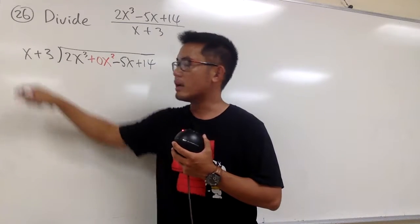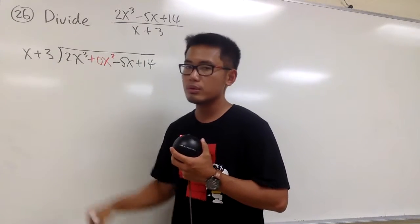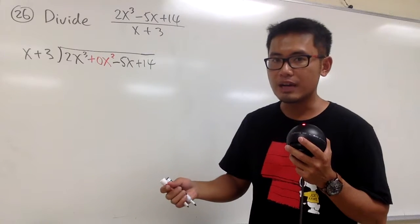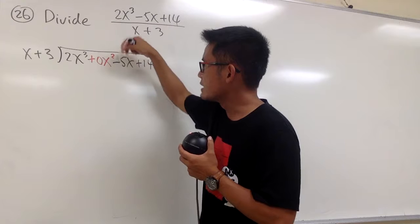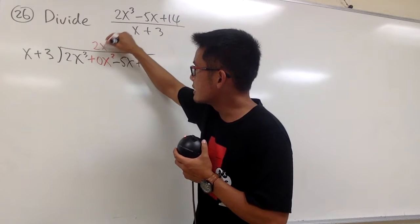And since this is just a 1, 2 times 1 will be 2. All in all, I need to have 2x squared. And I'm going to line it up with the x squared right here, so let me put down 2x squared here.